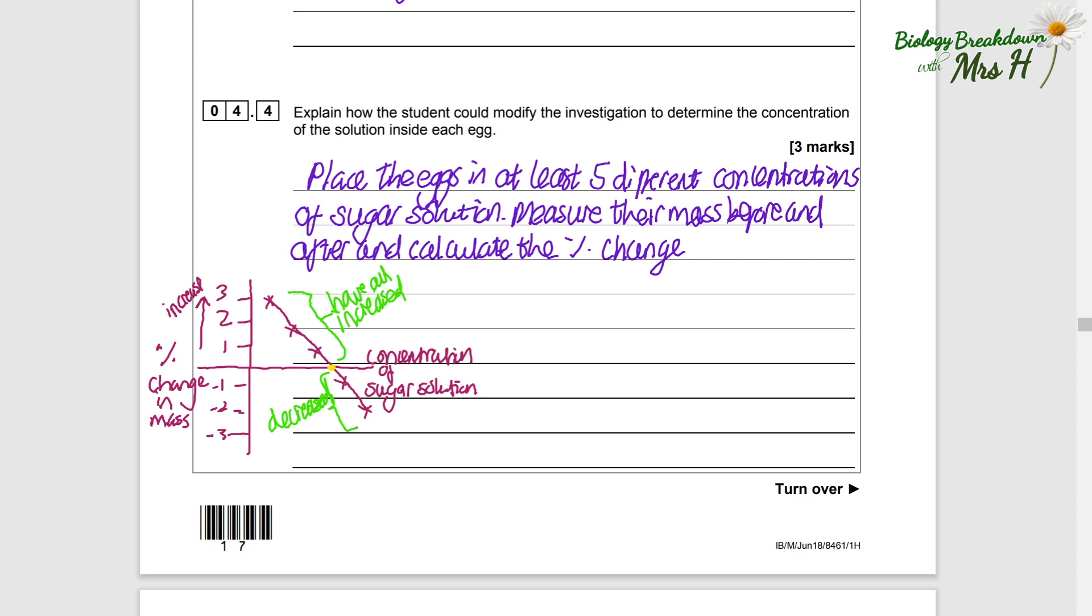But if we use this concentration of sugar solution, we can see that there's no change in mass, and that is because no water has moved in or out, meaning there's not a high water concentration and low water concentration anywhere. They're exactly the same water concentration on the outside of the egg compared to the inside of the egg, which means the solution concentration is the same inside and outside.